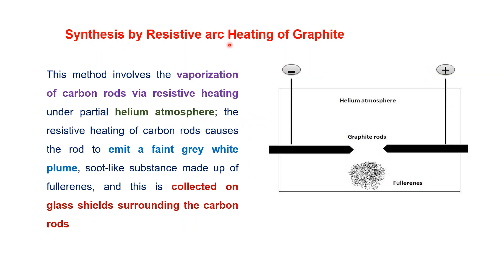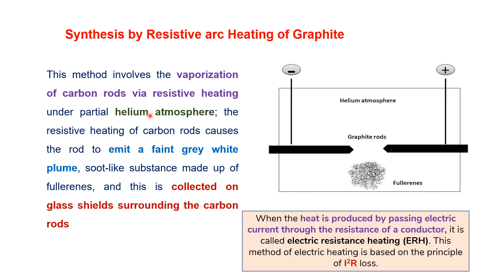Synthesis by resistive arc heating of graphite is somewhat similar to the first method. This method involves vaporization of a carbon rod via resistive heating under a helium atmosphere. Heat is produced by passing electric current through the resistance of a conductor — known as resistive heating — and the power or heat loss during this process equals I²R. The resistive heating of the carbon rod causes it to emit a faint gray-white plume made up of fullerenes, which is collected on a glass shield surrounding the carbon rod.